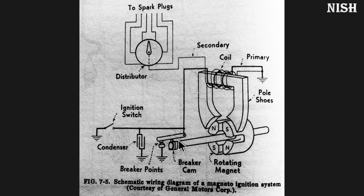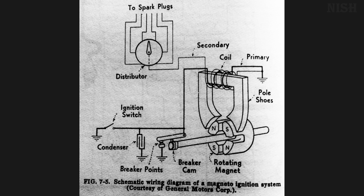Remember that the spark fires only when the breaker contact breaks. If the contact is closed, the current and voltage go directly to ground and no spark is produced. That is the simple construction and working of the magneto ignition system. If you found this video helpful, please comment, like, and share this video, and do subscribe to our channel. Thank you.